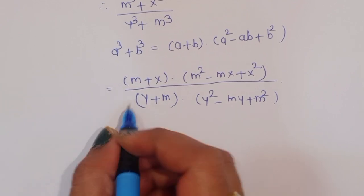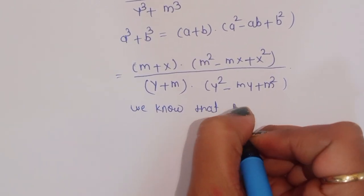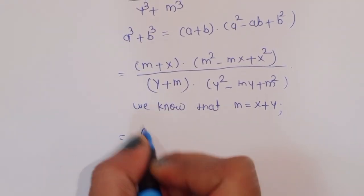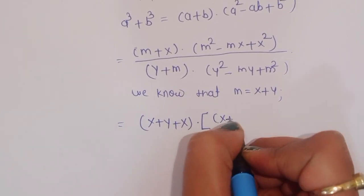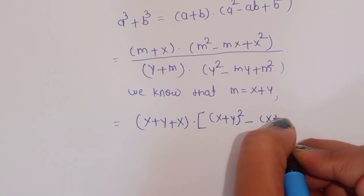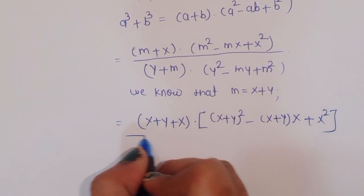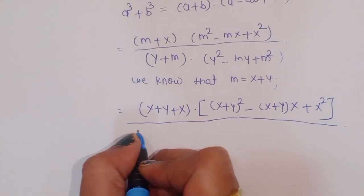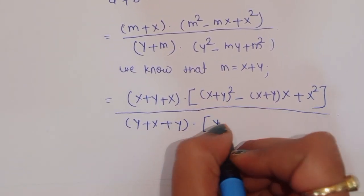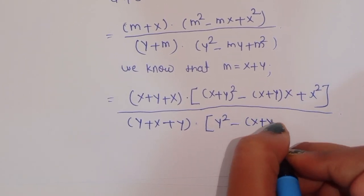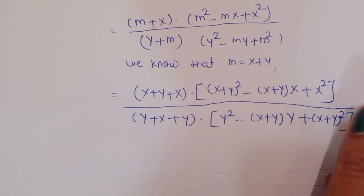Since m equals x+y, substituting back: the numerator becomes (x+y+x) times ((x+y)² - (x+y)x + x²), and the denominator becomes (y + x+y) times (y² - (x+y)y + (x+y)²).